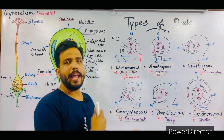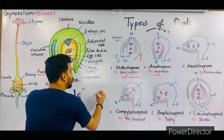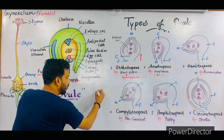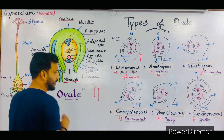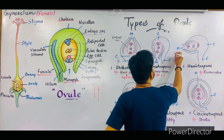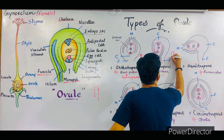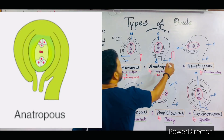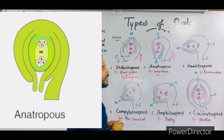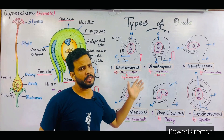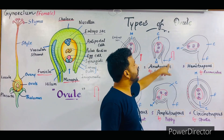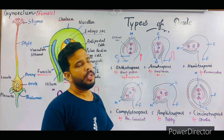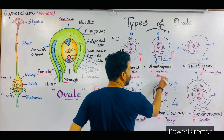The next ovule is anatropous. If we start from an orthotropous ovule and the funicle overgrows, due to this overgrowth the ovule will invert. This inverted ovule is called the anatropous ovule. The symbol of anatropous shows the ovule is inverted due to overgrowth of the funicle. In this type, the micropyle, chalaza, and funicle are not in a straight line — the ovule is inverted.